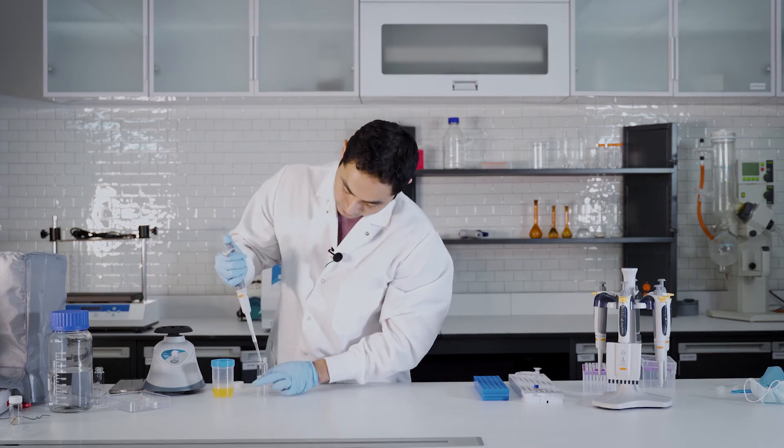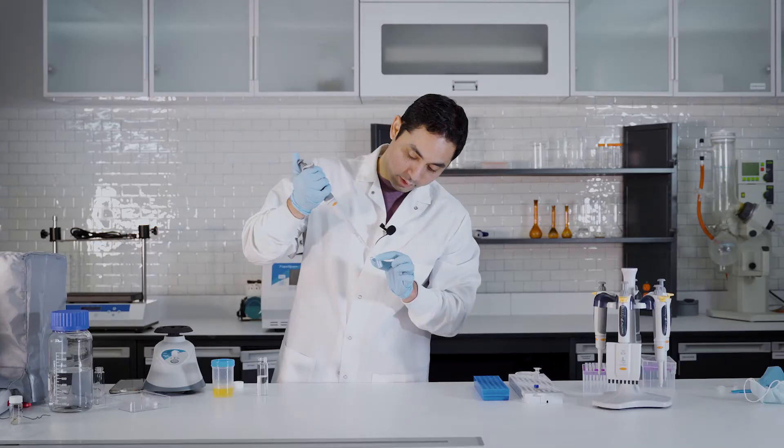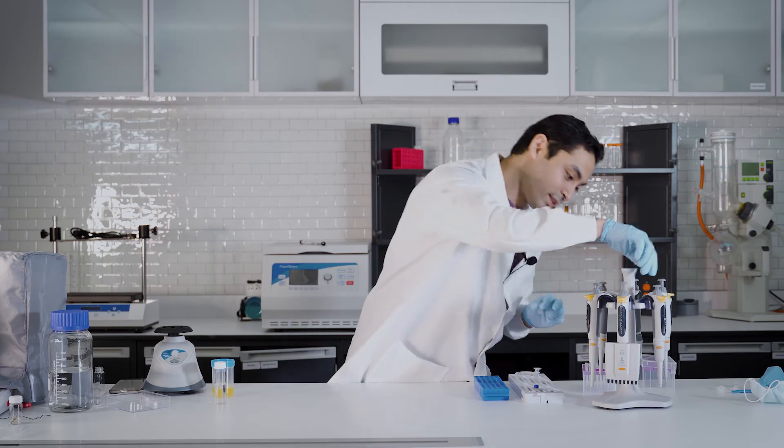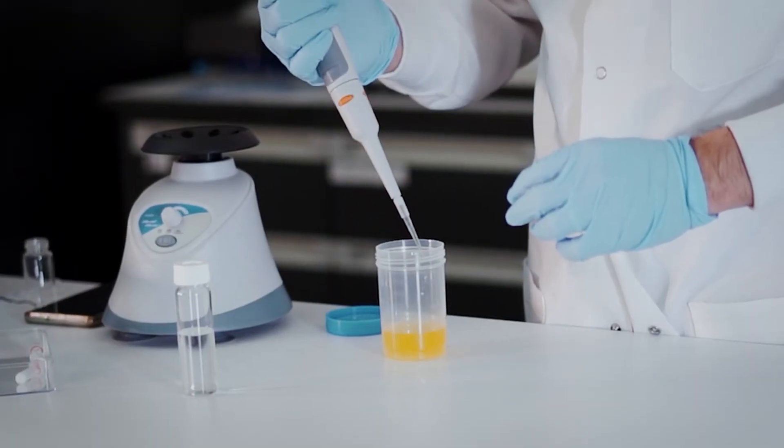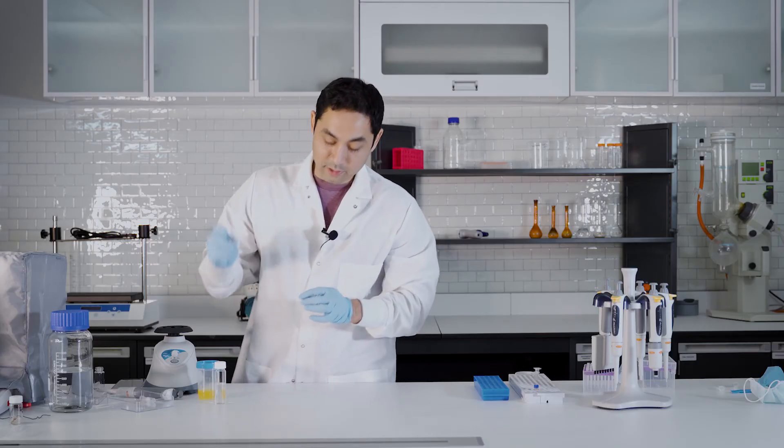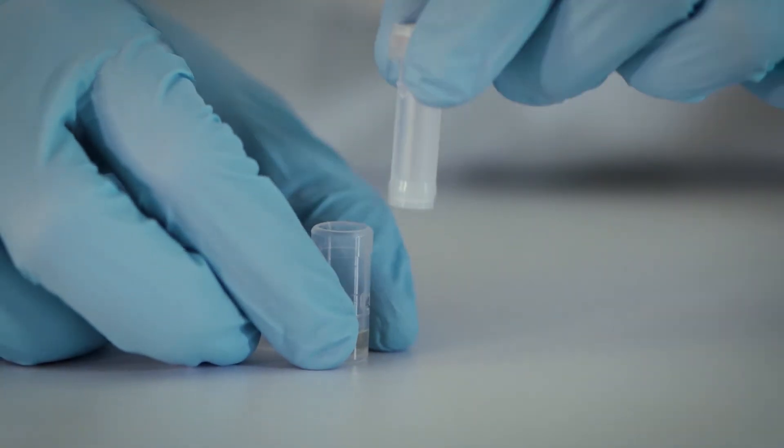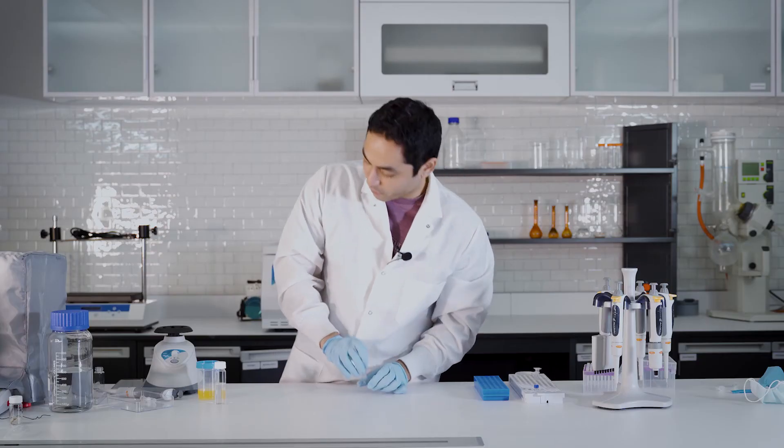All right let's pipette some acetonitrile in here. Let's pipette our sample. Now you put the plunger just part of the way down so we can vortex.